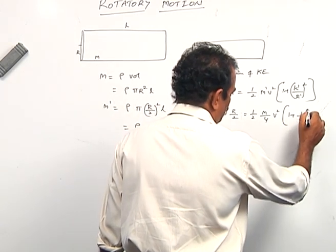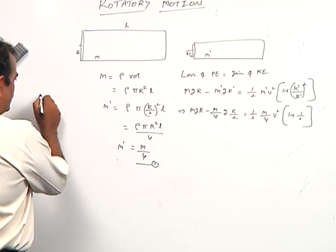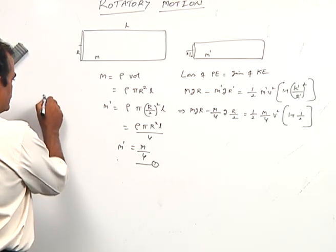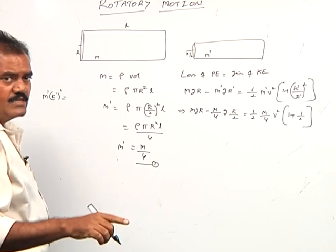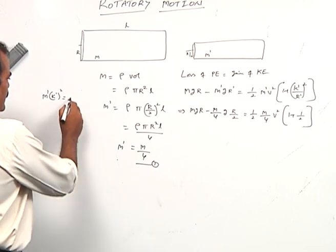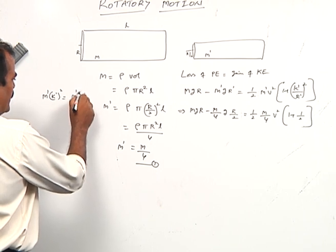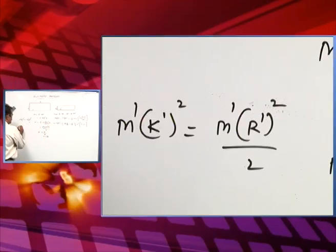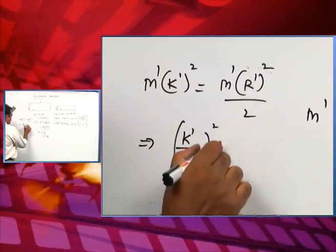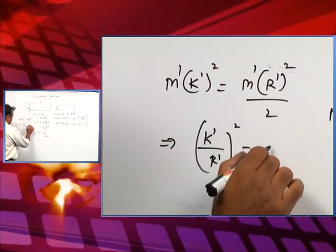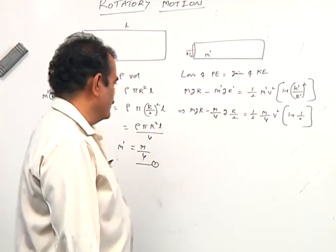Once again, the general formula is m' k'² = (m' r'²)/2 for a solid cylinder about its natural axis, so k' by r' whole square equals 1/2. That 1/2 is now applied here.